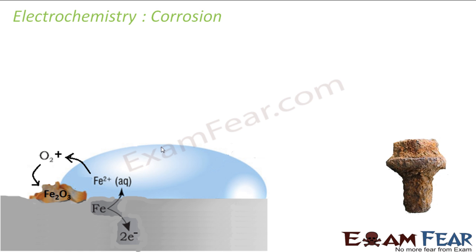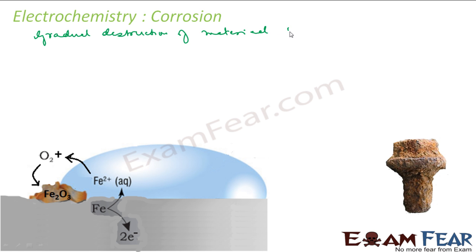Now we will go through a topic called corrosion. So what is corrosion? It is gradual destruction of materials by chemical reaction within the environment. It is electrochemical oxidation of metals in presence of oxygen — it is nothing but gradual destruction of material by chemical reaction, and this chemical reaction happens in the environment on its own.